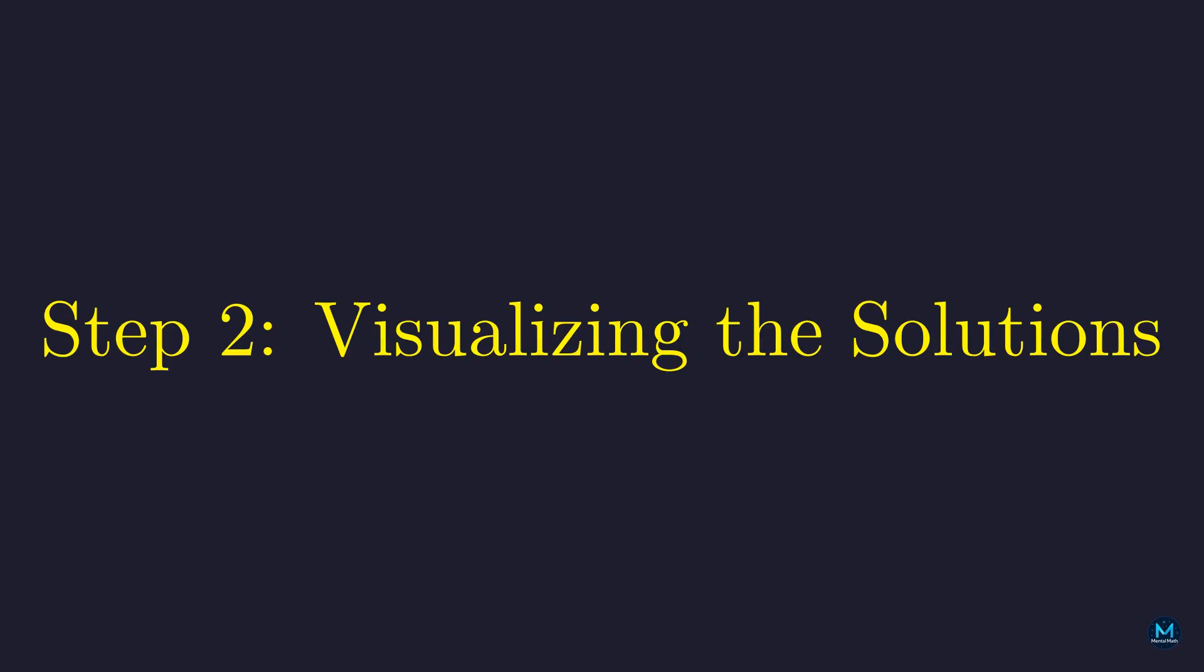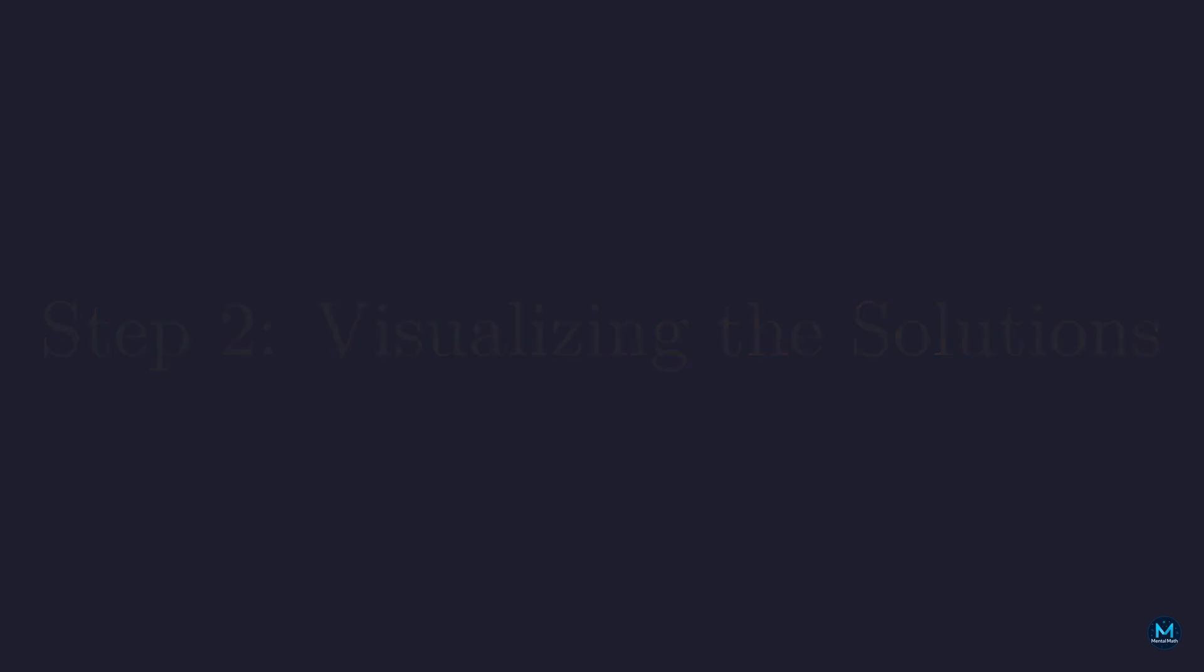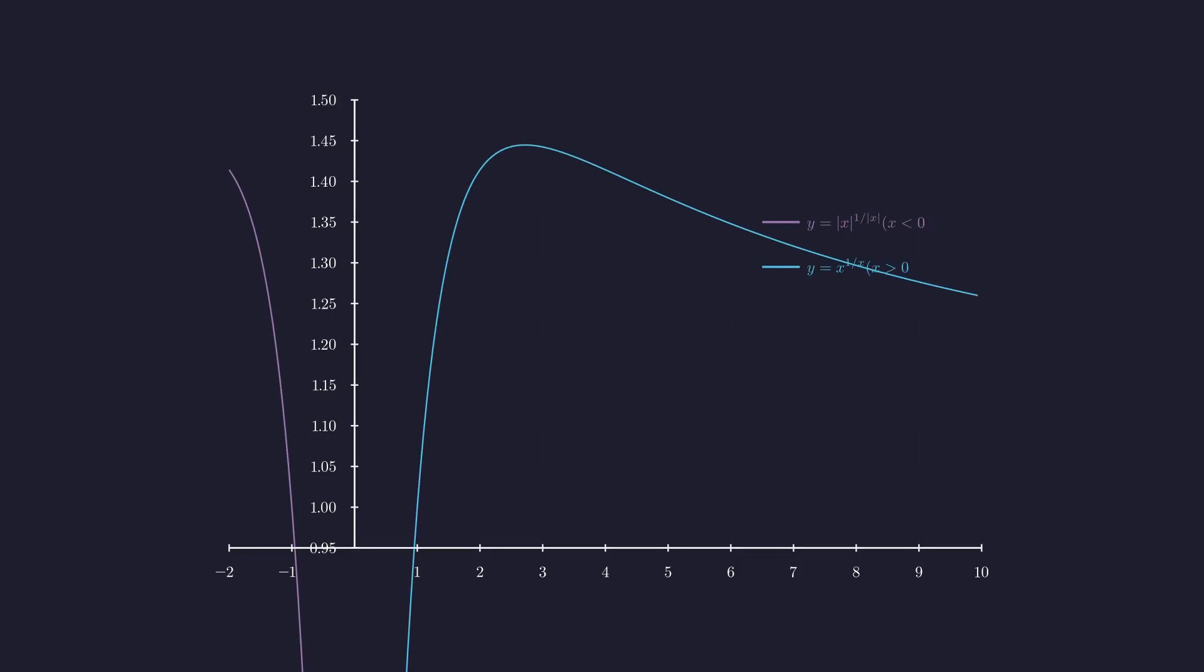Before diving into algebra, let's visualize what we're looking for. Graphing both sides will reveal how many solutions exist. We'll plot y equals x to the power of 1 over x and the horizontal line y equals 2 to the power of 1 over 32. The blue curve shows x to the power of 1 over x for positive x. The purple curve on the left shows the absolute value of x to the power of 1 over the absolute value of x for negative x, representing how the function behaves on the negative side.